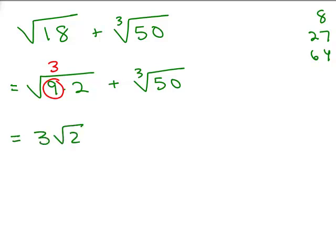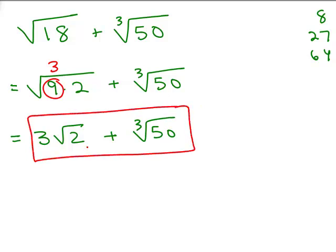It doesn't get any easier or any more simplified. So 3 square roots of 2 plus cube root of 50, that's your answer. So sometimes you just have to simplify one of them and you're not going to be able to combine any of the terms as well.